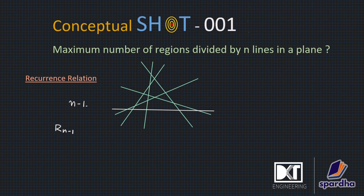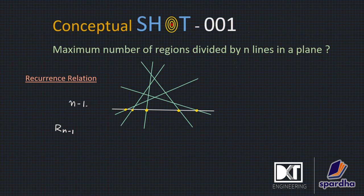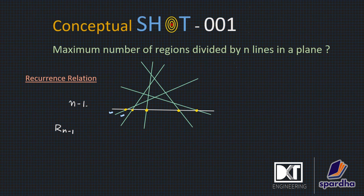We have n minus one lines — you can see the green line here. When we add the nth line, it intersects these n-1 lines at n points, and these intersections will create n new regions. You can see: one new region has been created, one new region has been created, one new region has been created — these n new regions are created because it is the nth line.